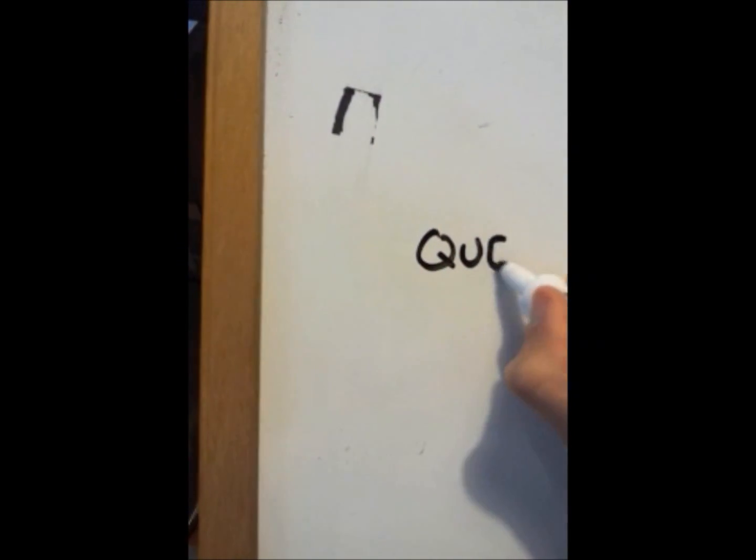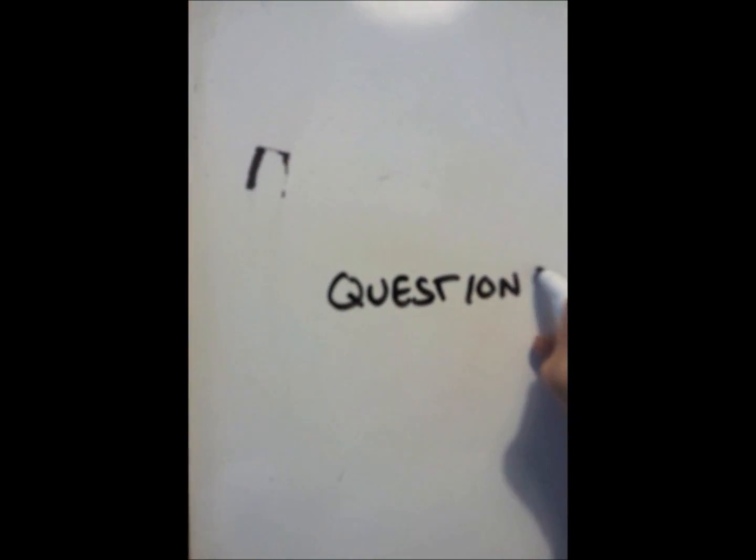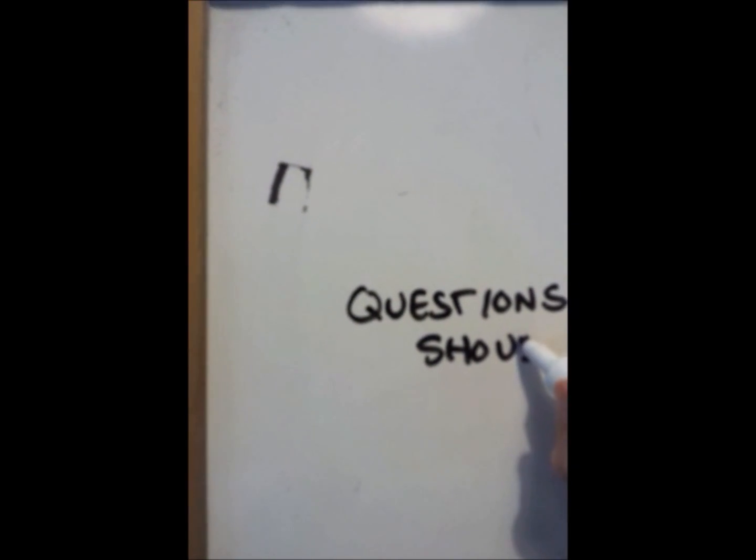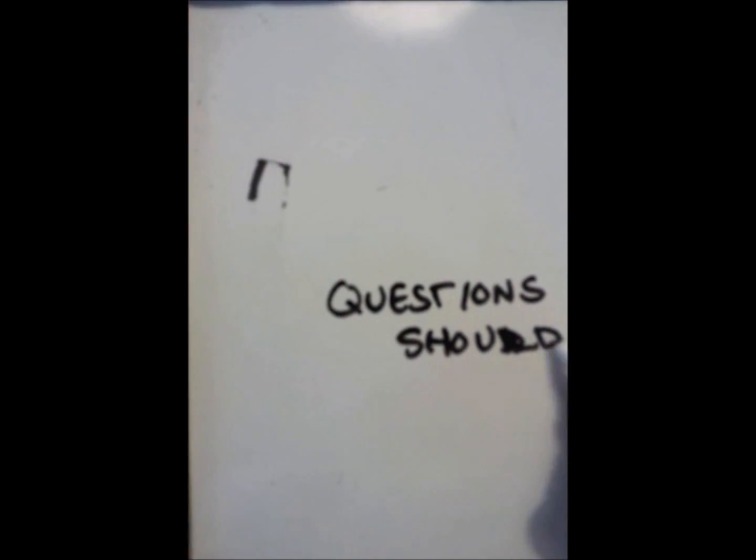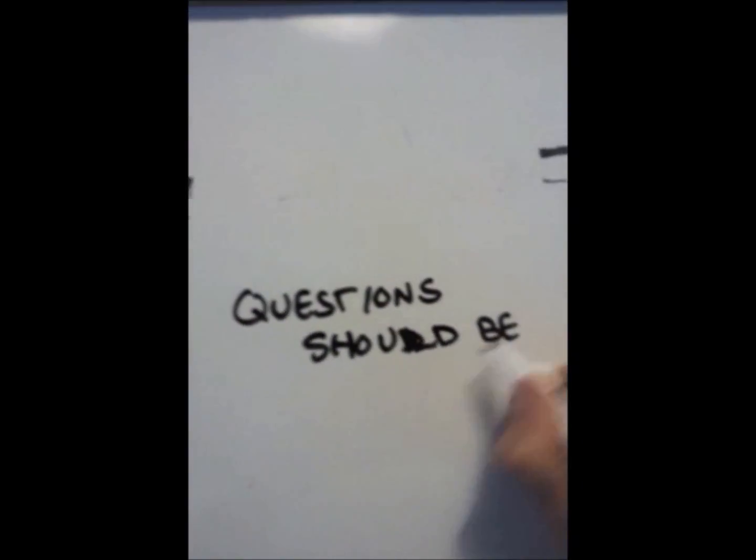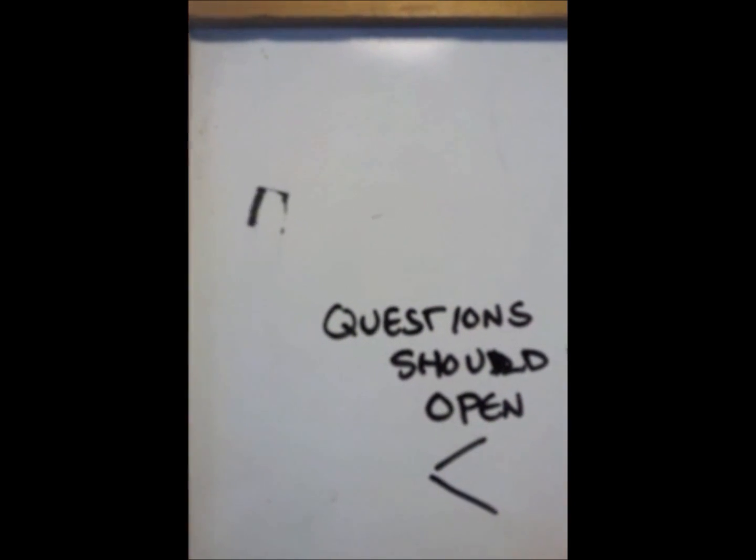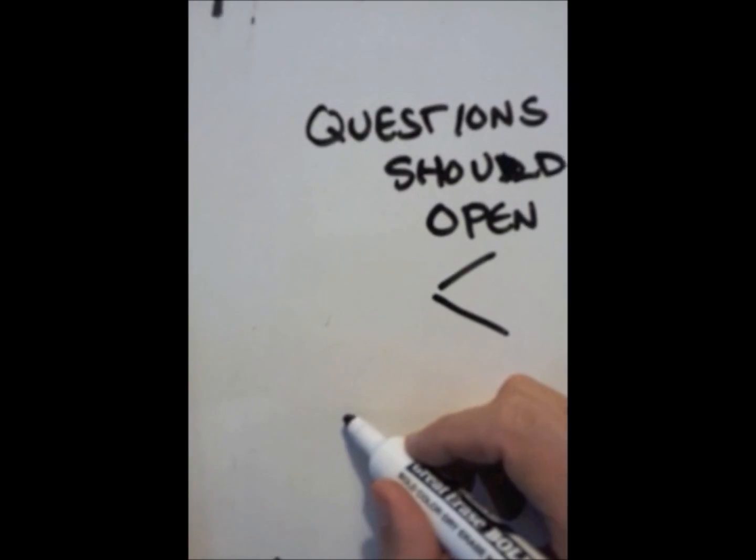The questions asked of participants are a critical part of any phenomenological study. The researcher should carefully word each question to ensure it is as open as possible. Questions should never assume anything about the subject's experience, lead them toward an answer, or be closed in any way.